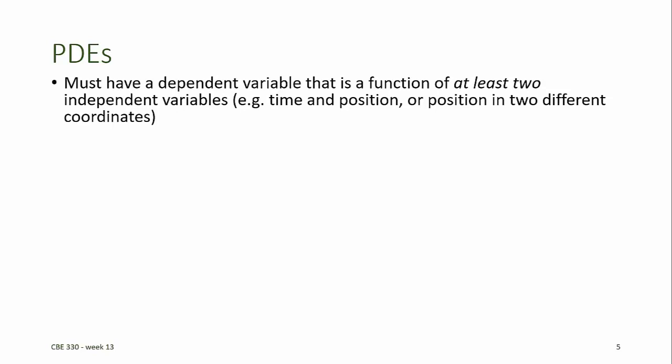Partial differential equations must have a dependent variable that is a function of at least two independent variables, such as time and position, or position in two different coordinates.